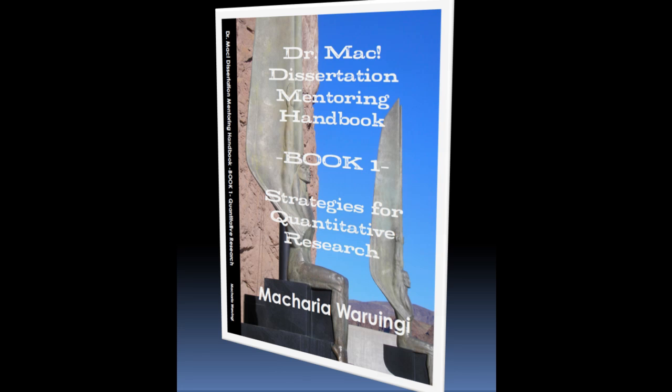So let's speak about how you develop the section called the appropriateness of the method in your research. In this section, you want to respond to the question: why is the quantitative method good for my study? You want to discuss why the quantitative method is appropriate for your study as opposed to the qualitative method. You already explained the properties of the quantitative method in the previous section; the task in this section is to illustrate why the method is appropriate.